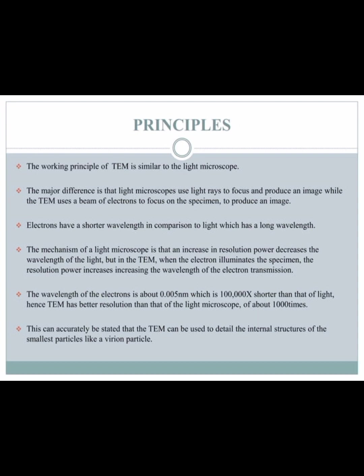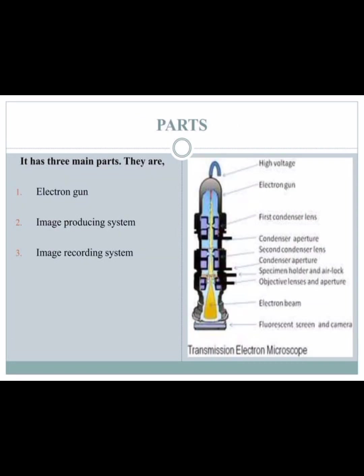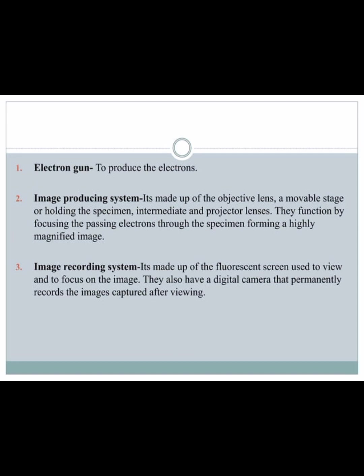This is an instrumentation diagram of TEM. The parts include the electron gun and the image-producing system. The image-producing system is made of the objective lens, a movable stage for positioning the specimen, and intermediate and projector lenses.